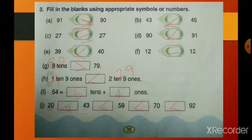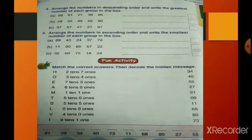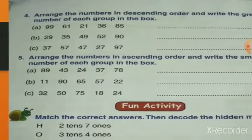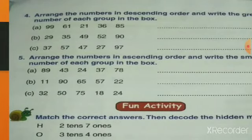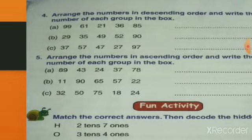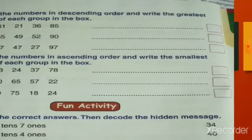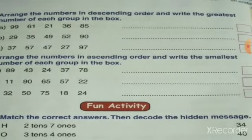We'll move to the next page, page 36, which I'm giving as homework. It's easy — you have to arrange numbers in descending order and write the greatest number in the box.